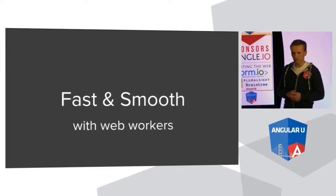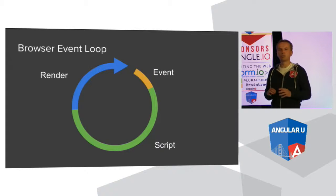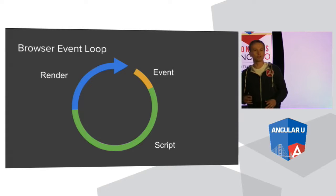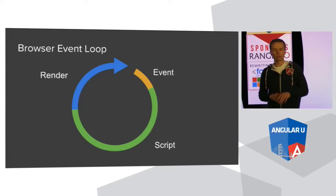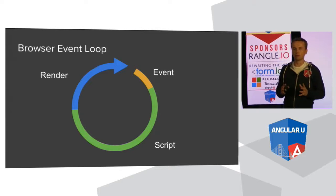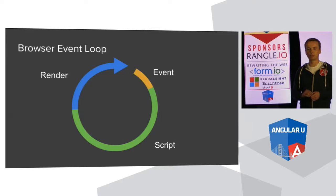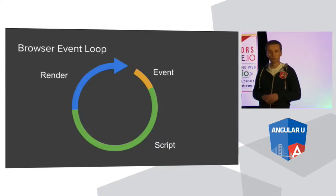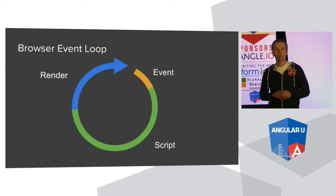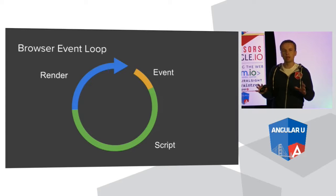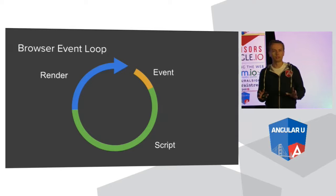We're trying to solve the problem of unresponsive apps — where scrolling ignores input or animations are choppy — by using web workers in Angular applications. At the heart of each browser there is an event loop running on the main thread, where all input events are processed and every line of script executes. There is only one main event loop, and it can process only one event at a time, so when many things happen, events queue up, creating latency and bottlenecks.